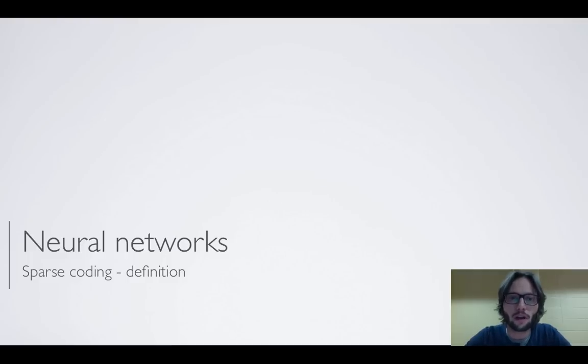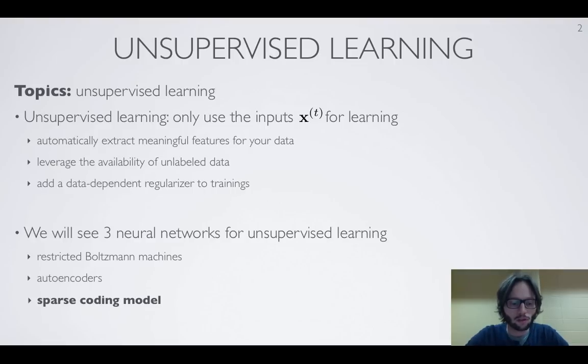In this video we'll introduce and define the sparse coding model. Sparse coding is a model in the context of unsupervised learning, where we have training data which is not labeled. So we only have a set of X vectors in our training set.